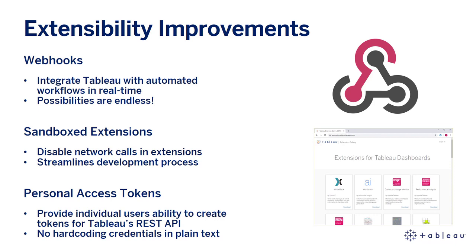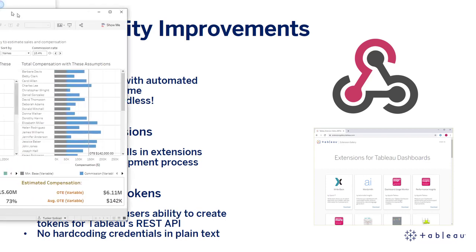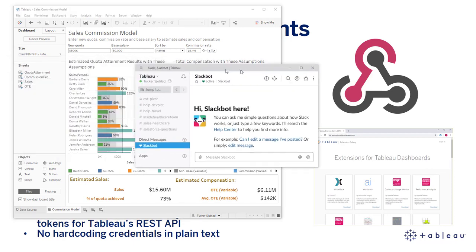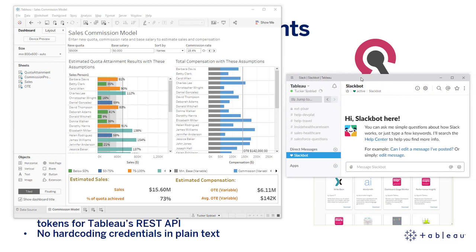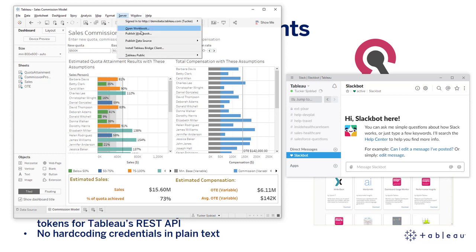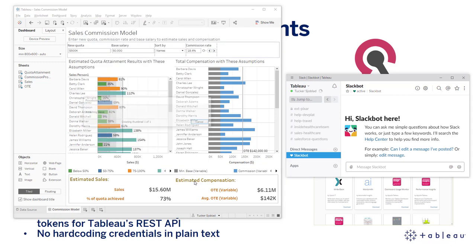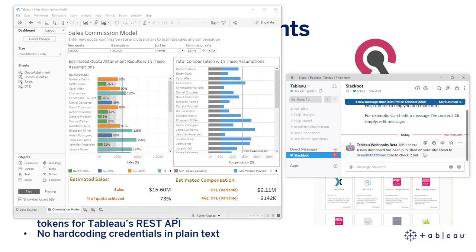Let's jump into a quick demo here to see what this is like. I'll grab a workbook with a dashboard that I'm ready to publish up to Tableau Server. Next, I'm going to bring over my Slack window so we can see the result of this automated workflow in real time. I've set up a webhook that notifies me via Slack whenever a new workbook is published up to my site. So let's go ahead and trigger that publishing process now. I'll publish the workbook, and you can see that as soon as it's complete, right over there, I've received a new Slack message, all powered by this webhook integration.